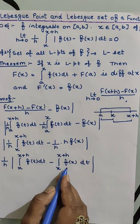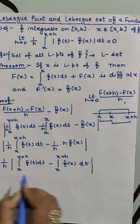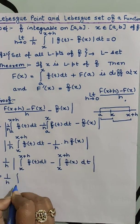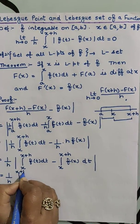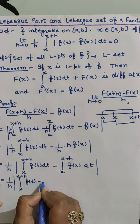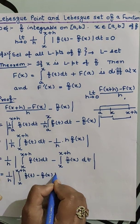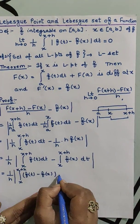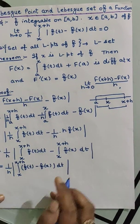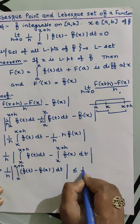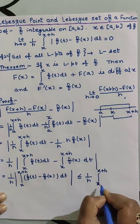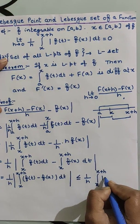with respect to t. This x will be constant. Now club the terms. We get (1/h)∫[x to x+h] [f(t) - f(x)]dt. As we know, the modulus of an integral is less than or equal to the integral of the modulus, so this is ≤ (1/h)∫[x to x+h] |f(t) - f(x)|dt.